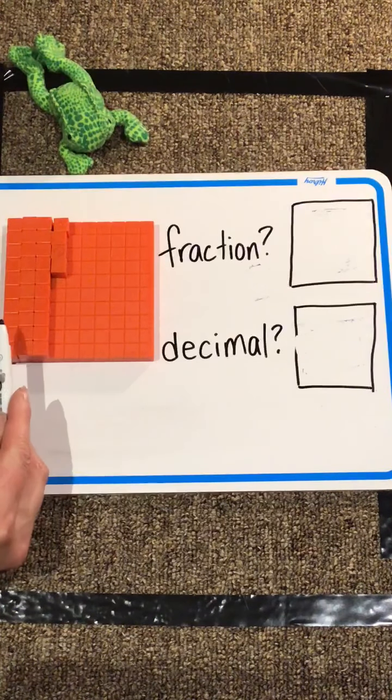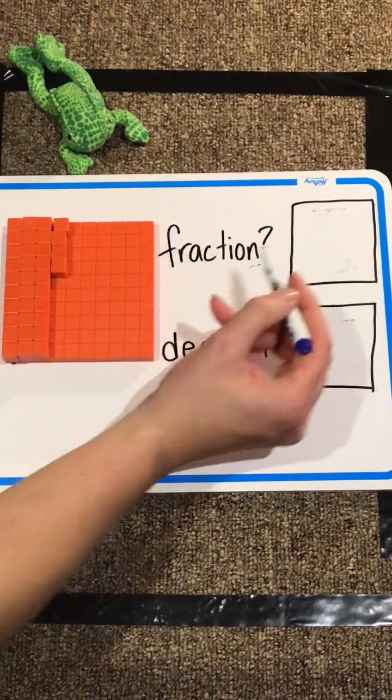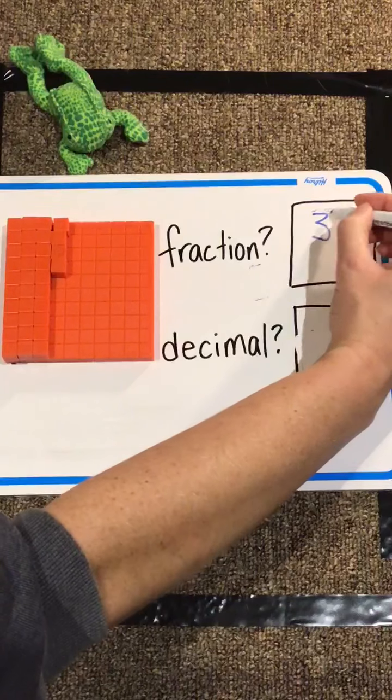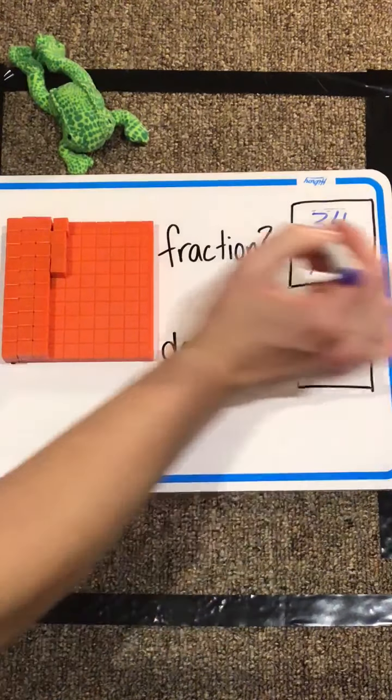So to count how many squares are covered, we can count by tens to start with. Ten, twenty, thirty, and then thirty-one, thirty-two, thirty-three, thirty-four. So our fraction will be thirty-four out of one-hundred.